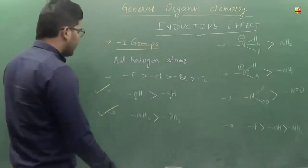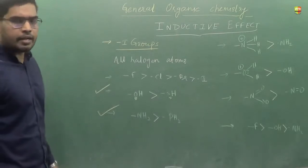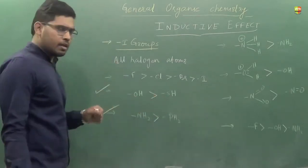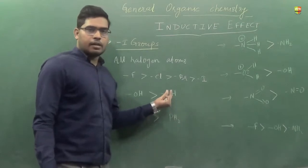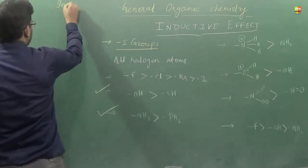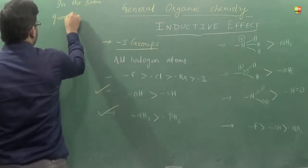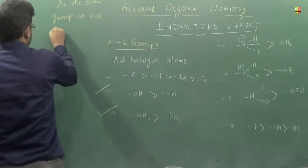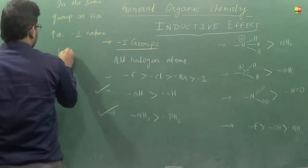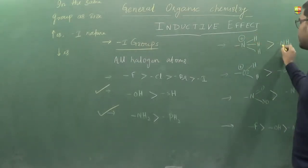In examples like OH and SH, there is a difference in size — oxygen and sulfur belong to the same group. When the size difference is present within the same group, as size increases, the minus-I effect decreases. So in the same group, as size increases, minus-I nature decreases.